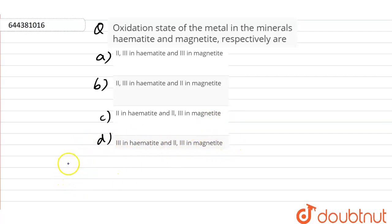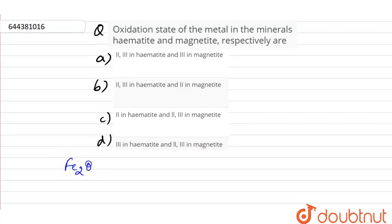What is hematite? Hematite is the ore of iron which is Fe2O3.